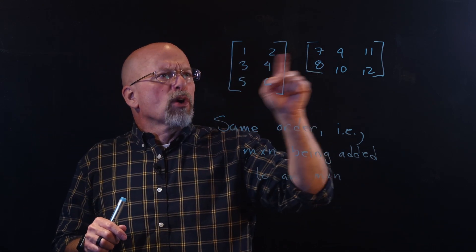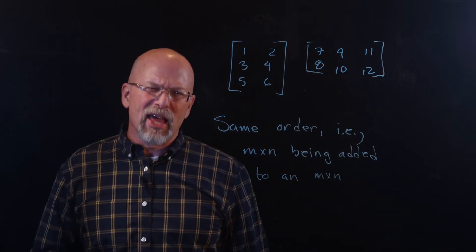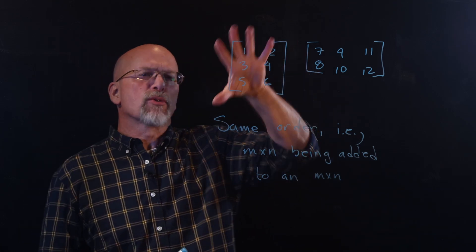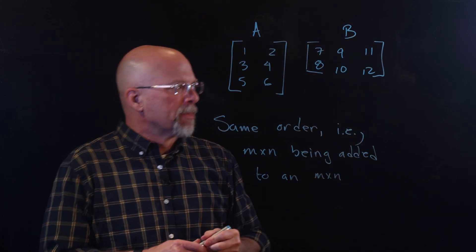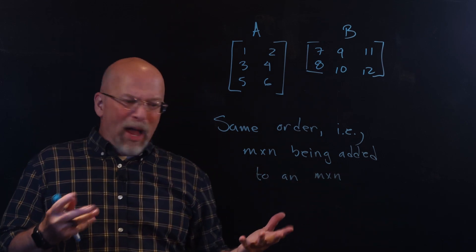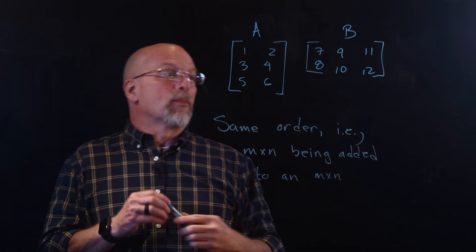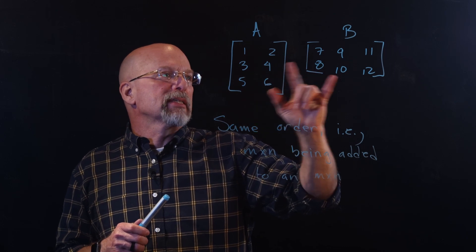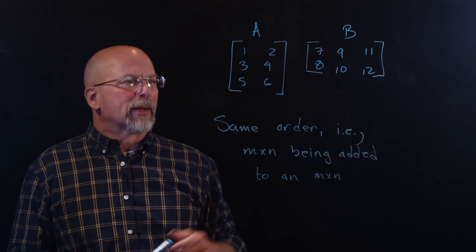Well, remember, what we're doing is we're adding corresponding positions. So I've got 1 plus 7, 2 plus 9. What does 11 get added to? Well, there is nothing to add it to because there's no third column in this first matrix. I'll call this matrix A, this matrix B. And since there's nothing to add to 11, what do we do? I mean, we could just simply disregard 11, and end up coming up with some sort of a 2-by-2 matrix where 1 and 7 are added, 2 and 9, 3 and 8, and 4 and 10, and any of the overhanging elements, we don't worry about them.